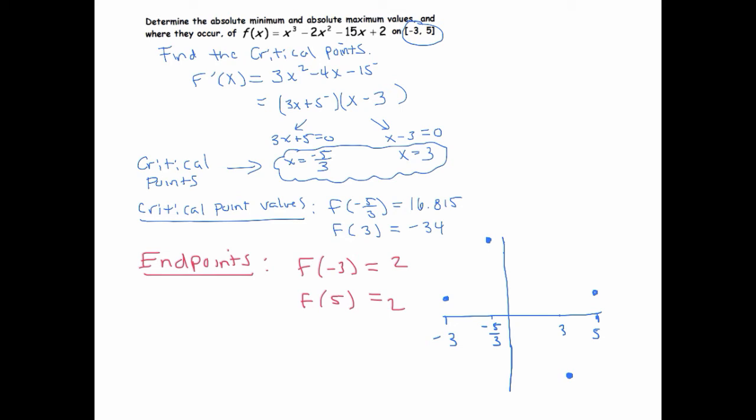So we have an absolute max of 16.815 at x equals negative 5/3.